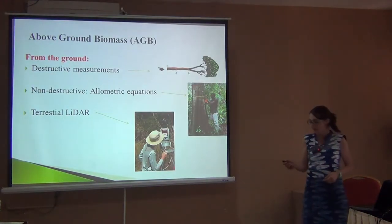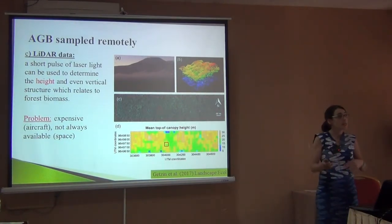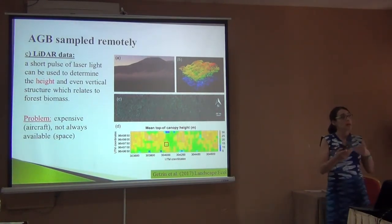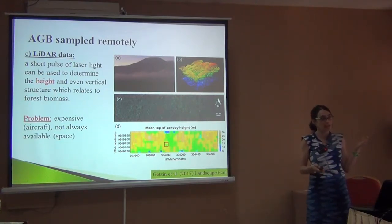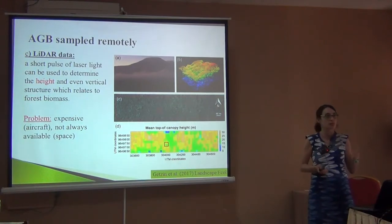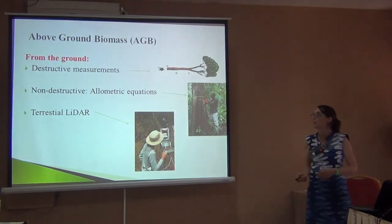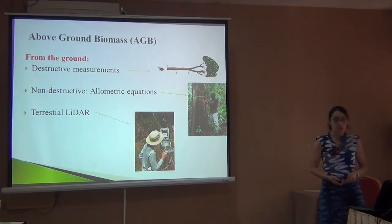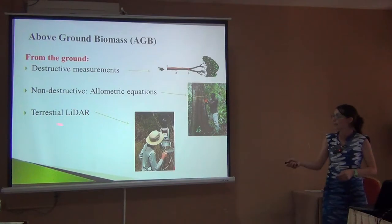Even when we use these remote sensing approaches, the relationship between height and biomass is also estimated using ground measurements. So even when we use remote sensing, we still need to measure trees on the ground. How do we measure these trees on the ground? We can cut them, use an equation so we don't need to destroy them, or we can scan them.